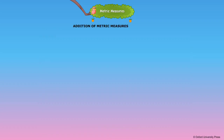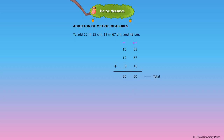Addition of Metric Measures. There are two ways to add metric measures. To add 10 meters 35 centimeters, 19 meters 67 centimeters, and 48 centimeters: in the first method, write the measures correctly in columns under the correct units and add. So, 10 m 35 cm + 19 m 67 cm + 48 cm = 30 meters 50 centimeters.